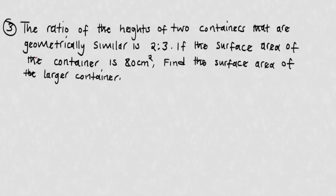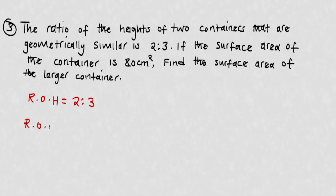Question three: the ratio of the heights of two geometrically similar containers is 2 to 3. They've already given us the ratio of heights, so we don't need to reduce further. The surface area of the smaller container is 80 square centimeters — find the surface area of the larger container. Since we're looking for area, find the ratio of areas by squaring: 2² = 4, 3² = 9.